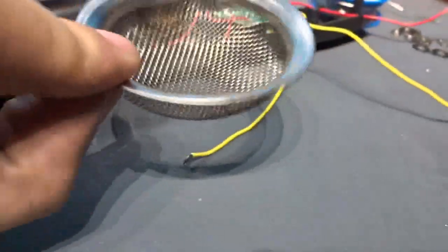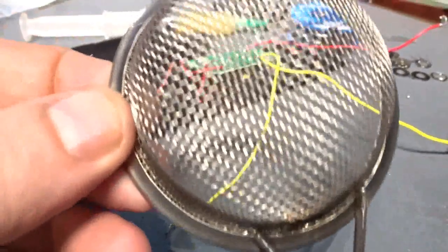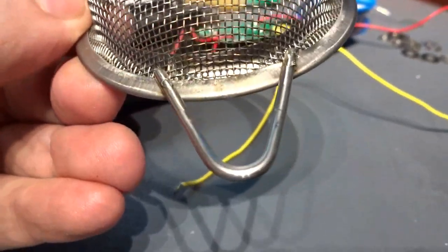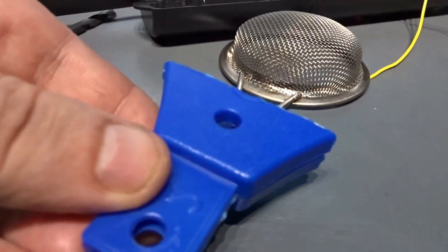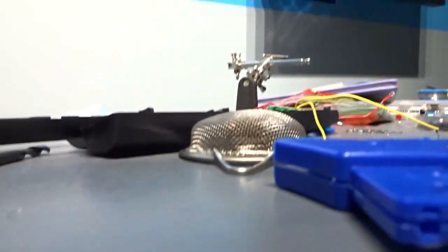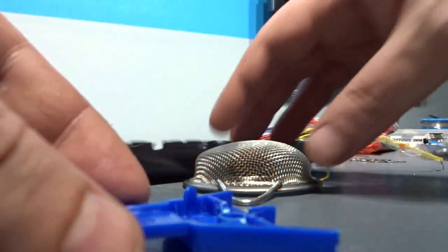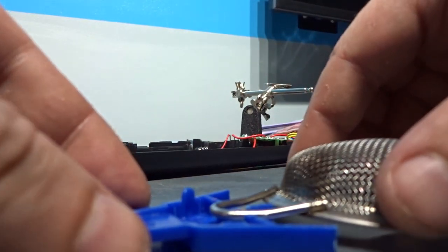You can't solder to this because it's stainless steel, but it is highly conductive. Don't throw away the mounts that hold the battery - keep them and cut them down into a V-shape. That will slot inside there.